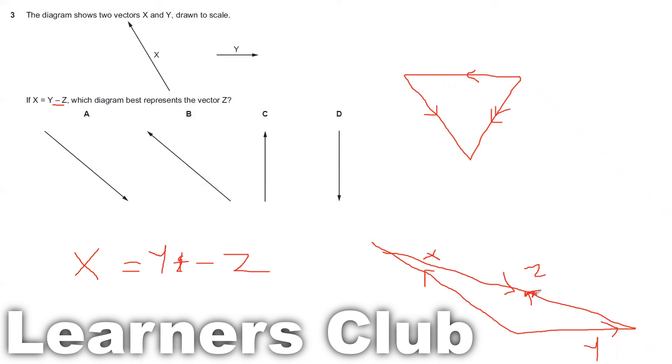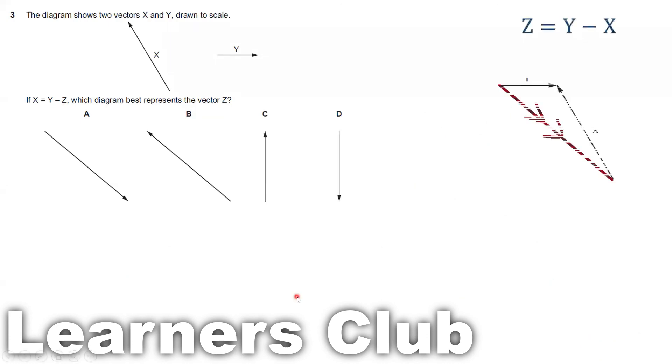So as you can see, this diagram which shows this direction is your answer e. Therefore the correct option is answer a.